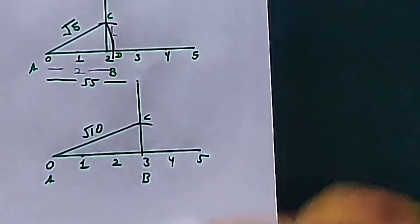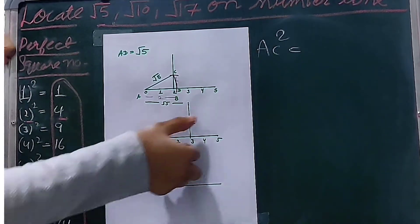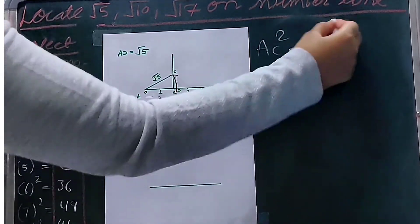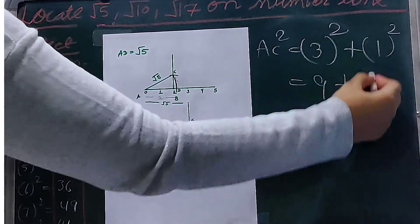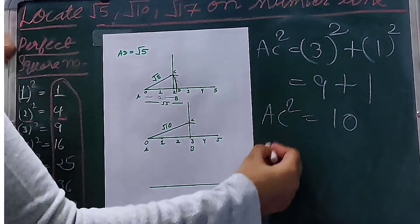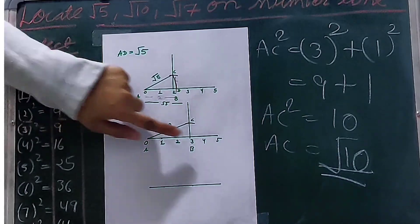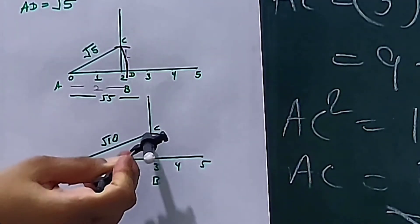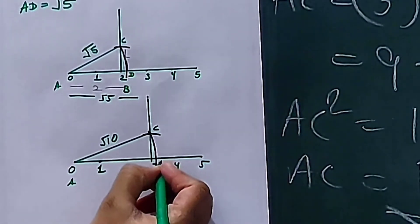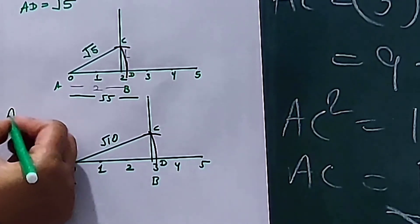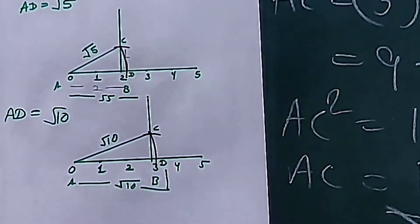Now we will prove it by Pythagoras theorem again. According to Pythagoras theorem, AC squared equals AB squared plus BC squared. AB is 3 units, so 3 squared plus BC squared equals 1 squared. 3 squared equals 9, plus 1 squared equals 1, so AC squared equals 10 and AC equals root 10. To draw it on the number line, make an arc from this point onto the number line and mark this point as D. AD is equal to root 10.